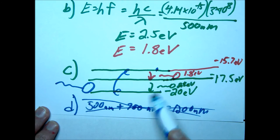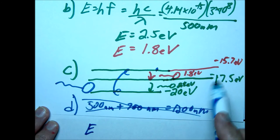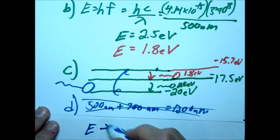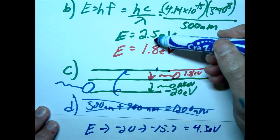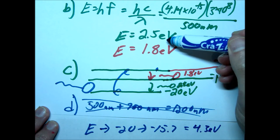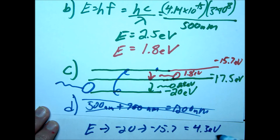What we're going to do is first figure out how much energy is needed. We go from negative 20 to negative 15.7. That's equivalent to 4.3 electron volts. We could have also simply added 2.5 and 1.8, because that total should add up to the total energy.